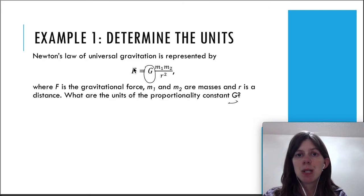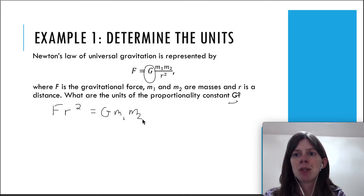The best way to figure this out is to solve for G first. So we have force on the left side, we have two masses, and we have r which stands for distance. To get G by itself, I'm going to multiply both sides by r squared. This will give me F times r squared equals G times m1 times m2. And then I'm going to divide by the two masses. This will give me G by itself.